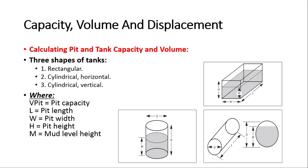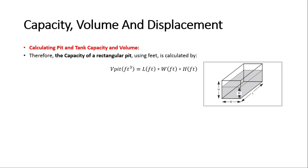Any rectangular tank has length symbolized by L, width symbolized by W, and height symbolized by H. If it contains mud, we also have mud level height symbolized by M. Now let's learn how to calculate capacity and volume of mud tanks. The capacity of a mud tank is the volume that the tank could hold if it were full — the maximum possible volume.